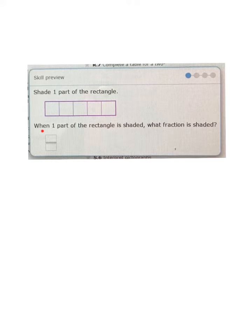This last example is very similar, but has two different parts. So the first asks us to shade one part of the rectangle. So I'll do that. Shade one part. Okay. Second part of the question says, when one part of the rectangle is shaded, what fraction is shaded?